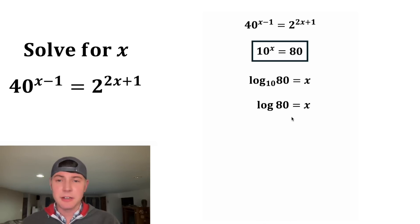Now we can plug this into a calculator. We just hit log 80. And it's going to give us x is approximately equal to 1.90309. And there's a whole bunch of other decimals. So log 80 would be the exact value of x. And this would be the decimal approximation to five places.